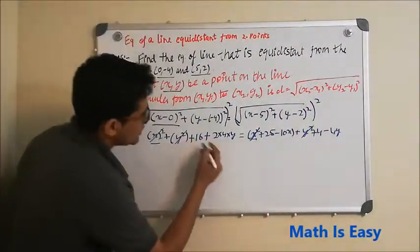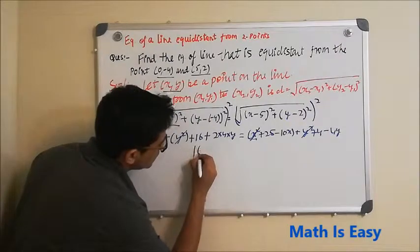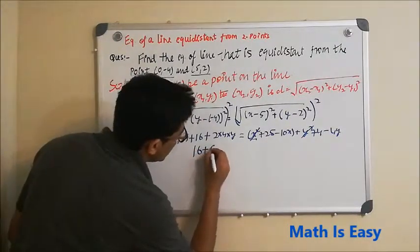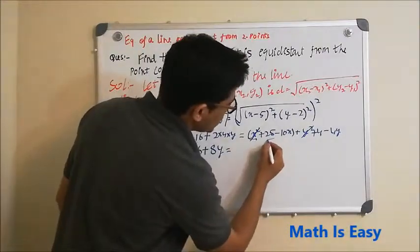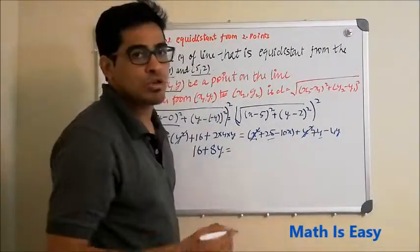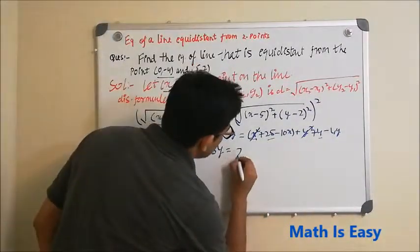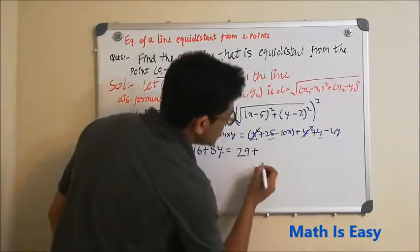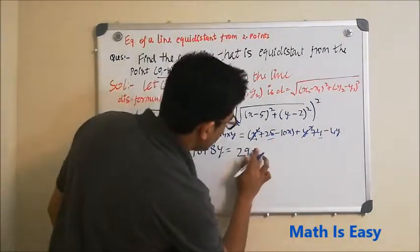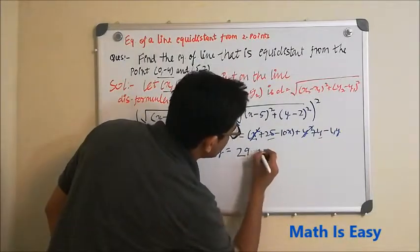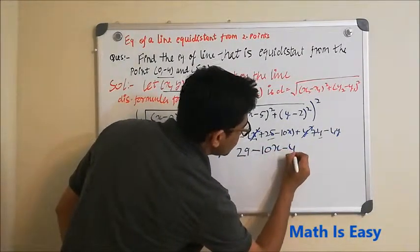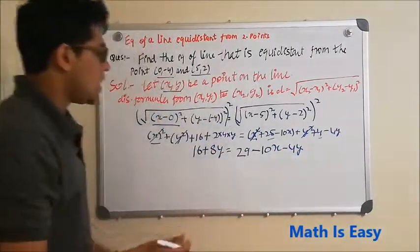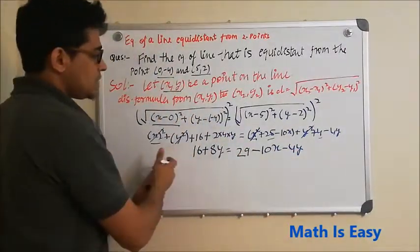What is left here is 16 + 8y, and here it is 25 + 4, so we will combine these which is 29 - 10x - 4y.